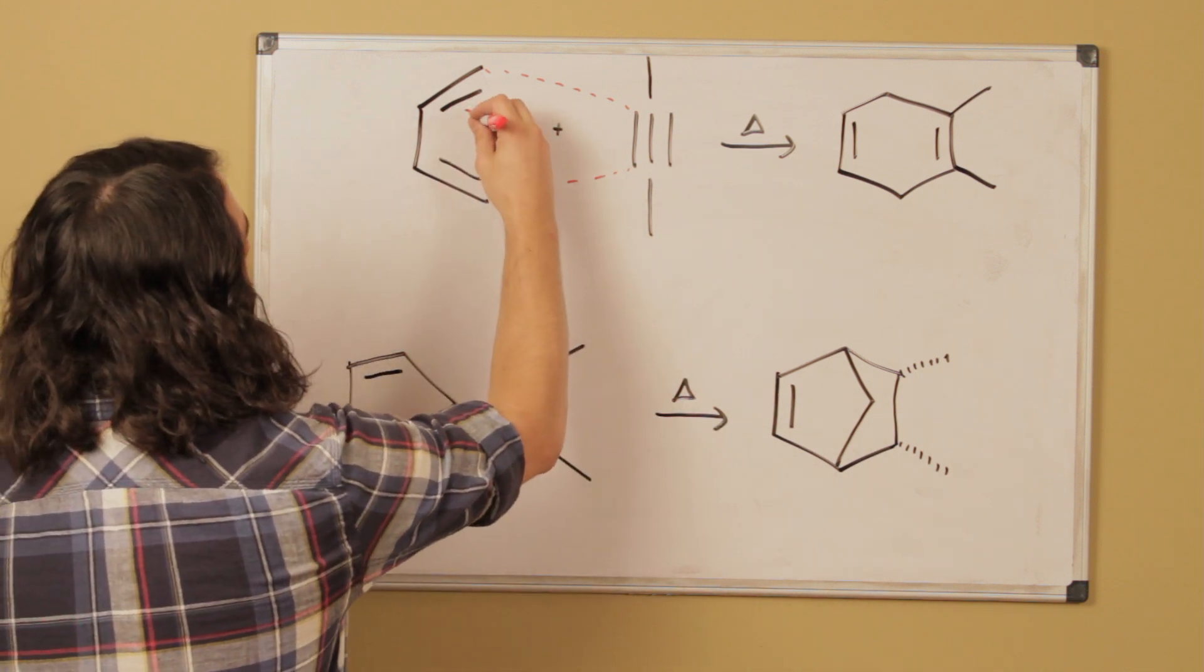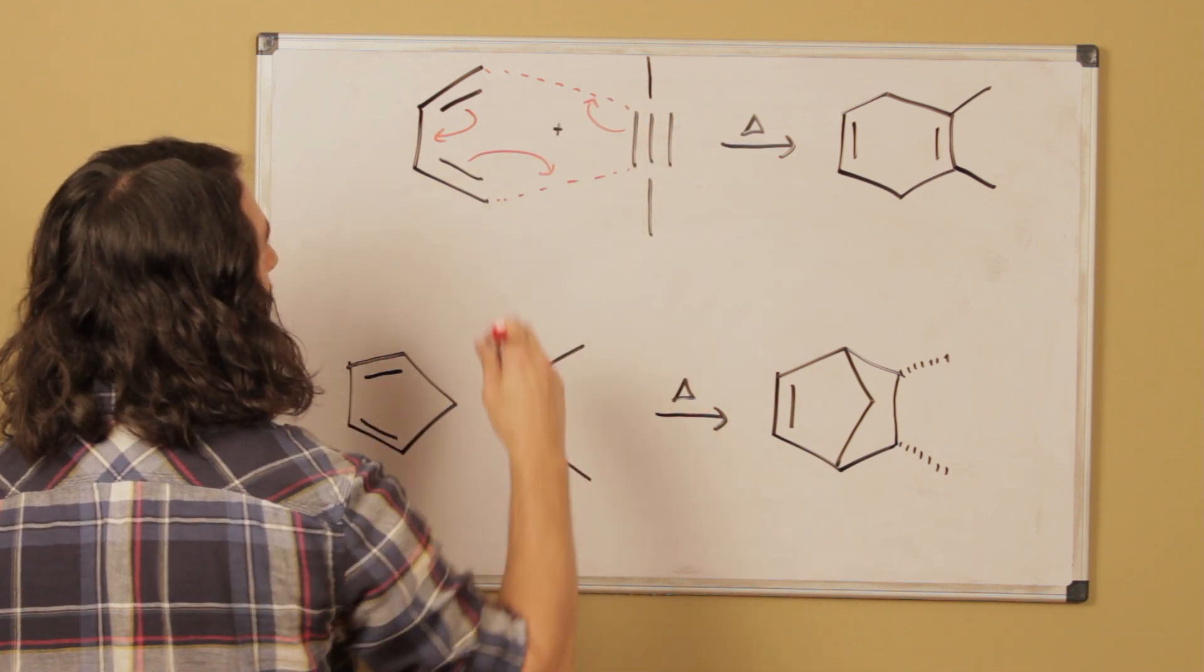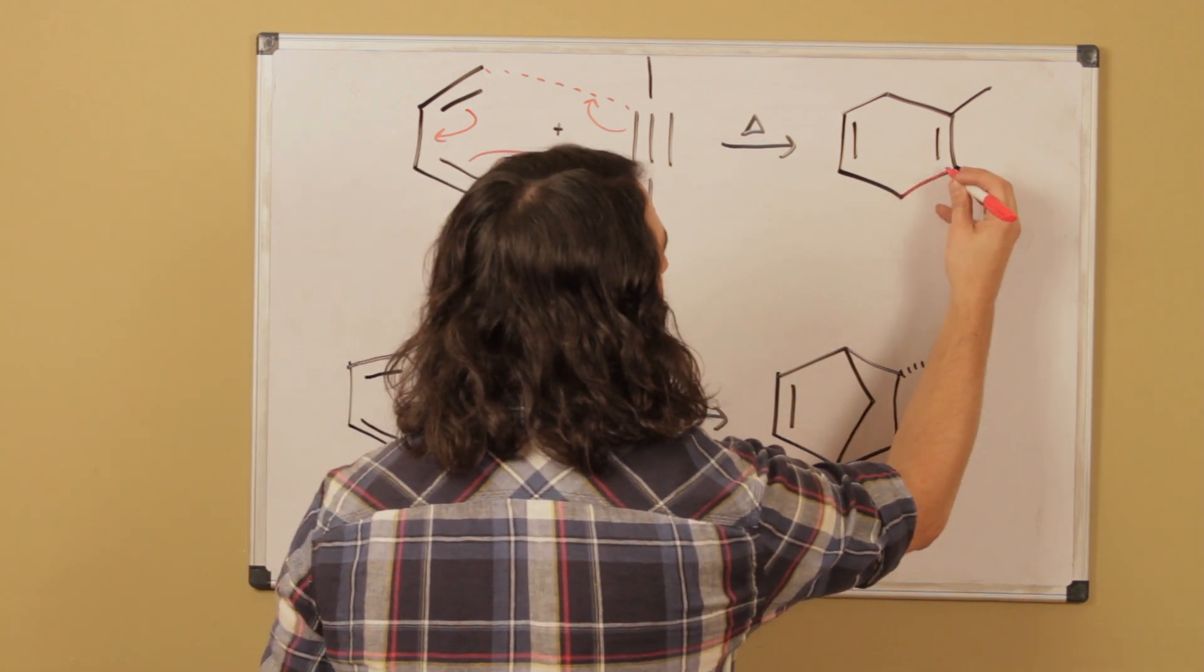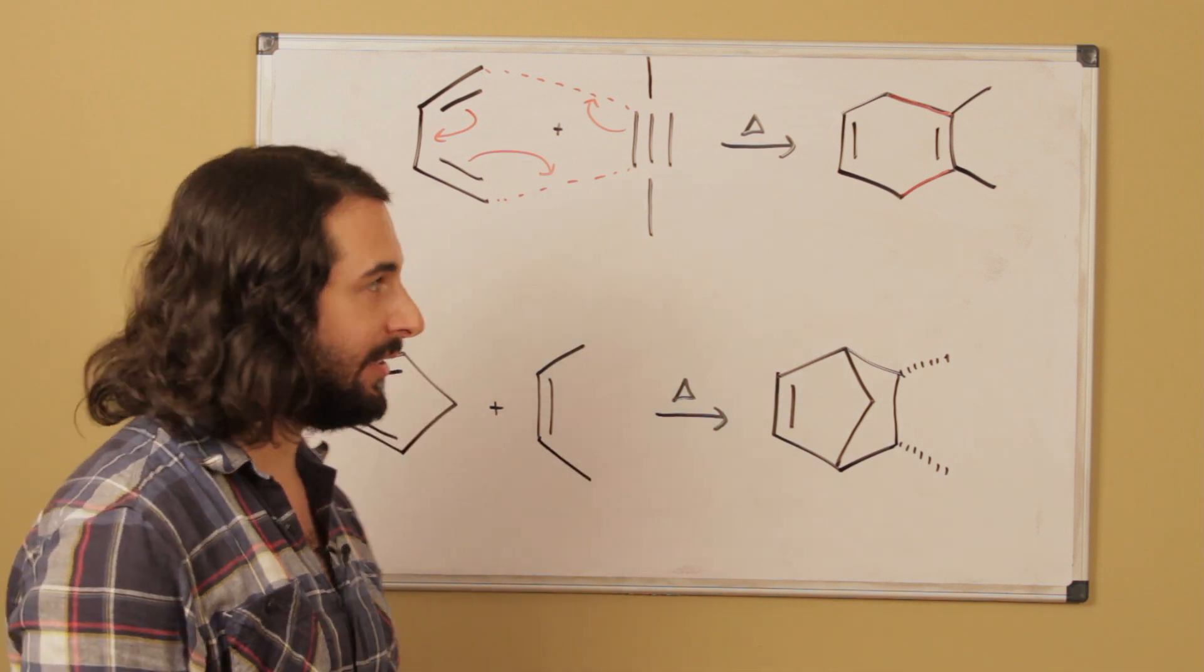So we're going to push these pi bonds around and we are going to create a six-membered ring. So here are the two new sigma bonds. In a Diels-Alder we're always going to create two new sigma bonds and one new pi bond.